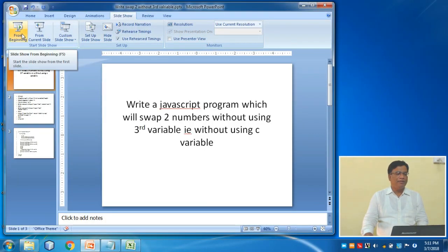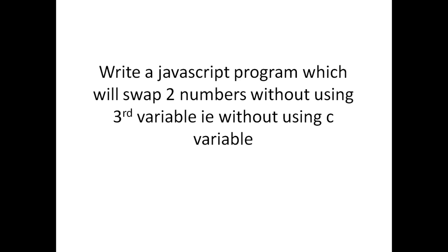Students, let us understand a difficult question which comes in exams: if a question is changed in pattern and you are asked to write a program for swapping two numbers but without using a third variable. That means you will not use a third container — only two variables, a and b, will be inputted by the user, and you will manage your program to swap the values.